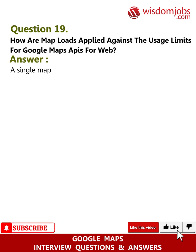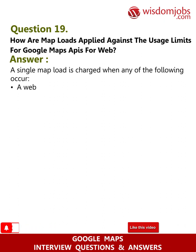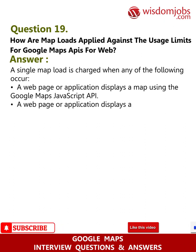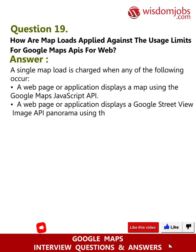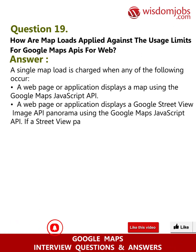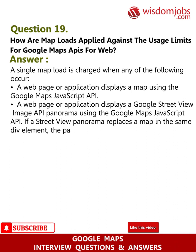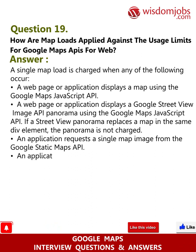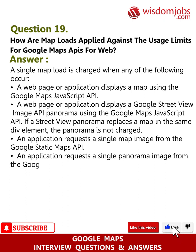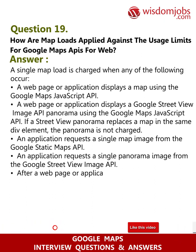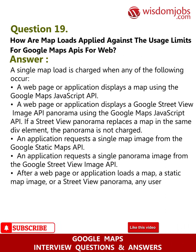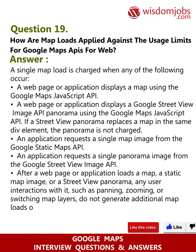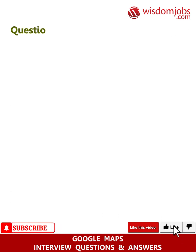Question 19: How are map loads applied against the usage limits for Google Maps APIs for web? Answer: A single map load is charged when any of the following occur: a web page or application displays a map using the Google Maps JavaScript API; a web page or application displays a Google Street View Image API panorama using the Google Maps JavaScript API — if a street view panorama replaces a map in the same development, the panorama is not charged; an application requests a single map image from the Google Static Maps API; or an application requests a single panorama image from the Google Street View Image API. After a web page or application loads a map, a static map image, or a street view panorama, any user interactions with it such as panning, zooming, or switching map layers do not generate additional map loads or affect usage limits.